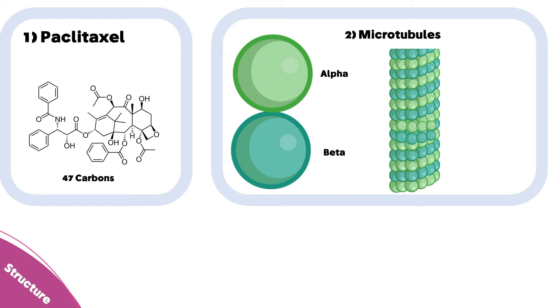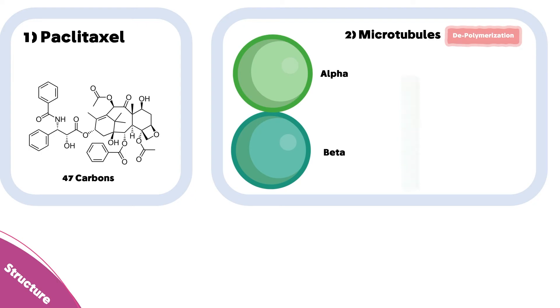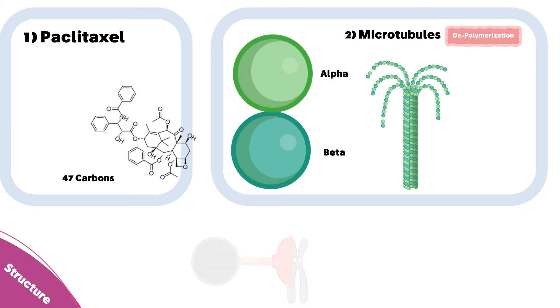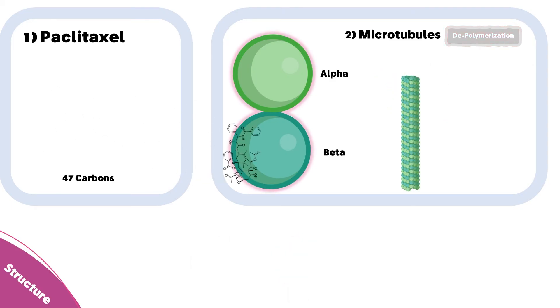On the other hand, microtubules can undergo a depolymerization state in which they peel off from the center, and by which they can pull the chromosomes. As you can see, paclitaxel binds only to the beta subunit, inhibiting the depolymerization process.